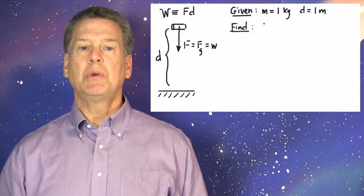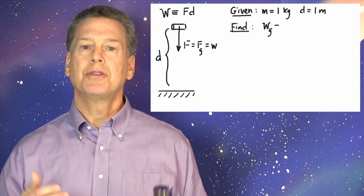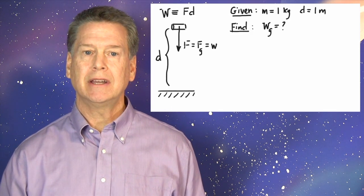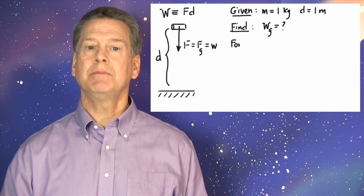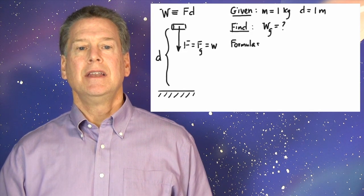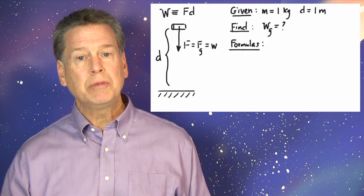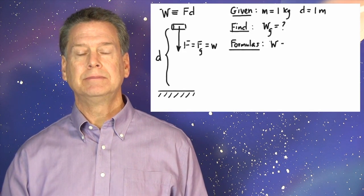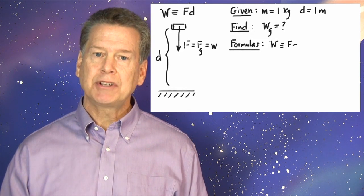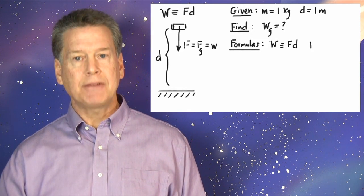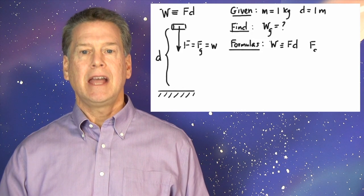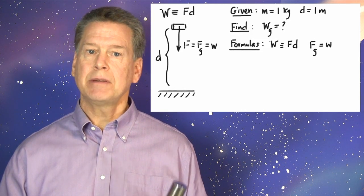We want to find the work done by gravity. Capital W sub G equals what? Now we guess which formulas are going to be useful. Capital W is defined as F times D.